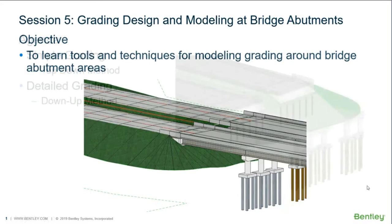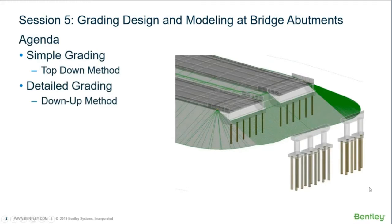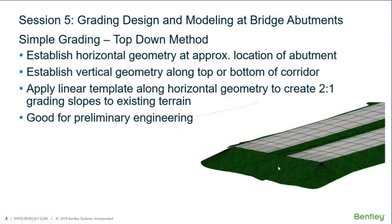The agenda covers two different methods. The first is a simple grading method where we start from the top and grade down to existing ground — this gives you fundamental concepts for your engineering process. The second is a more detailed grading method, the down-up method, where we go both up and down. The finished product will have grading in front of the bridge abutment, grading up to the upper roadway corridor, and wraparound slopes on the abutment edges.